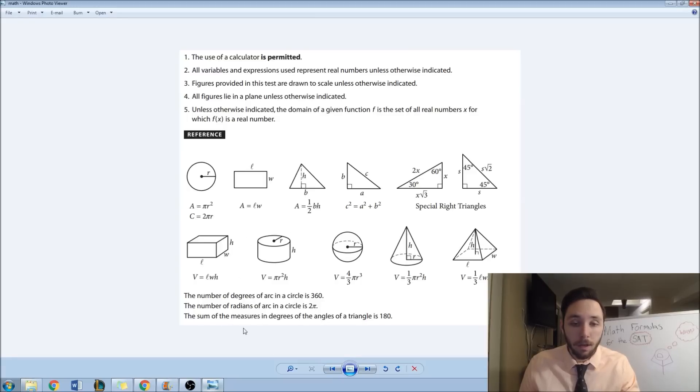Lastly, they give you the number of degrees of an arc in a circle is 360. And they're also going to give you the number of radians of an arc in a circle is 2 pi. So they give you that little conversion between radians and degrees. The last thing they give you, and I have no clue why they made a point to put this on the information section, it says the sum of the measures in degrees of the angles of a triangle is 180. You should know that. I don't know why they're telling you that. It's a little bizarre to me. Anyways, this is what they give you. How about we go over what they don't give you?